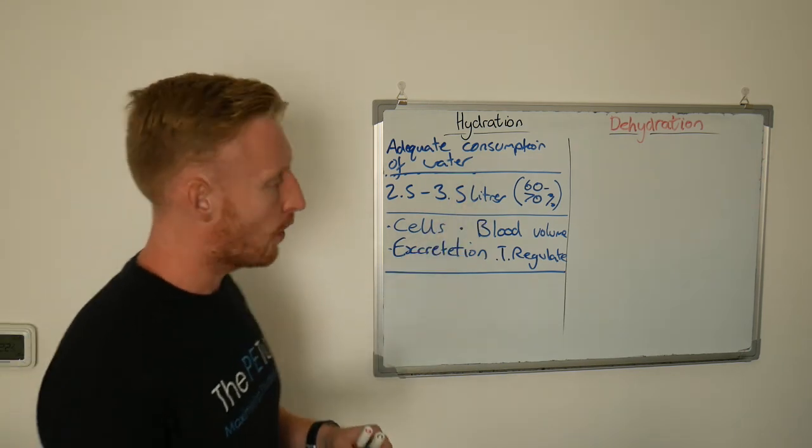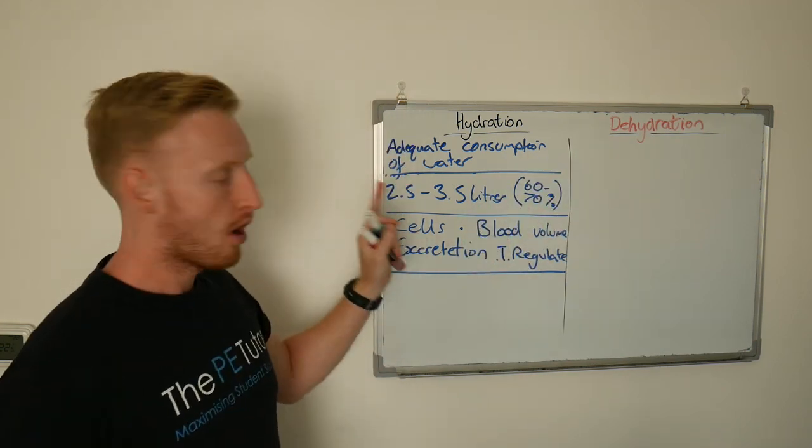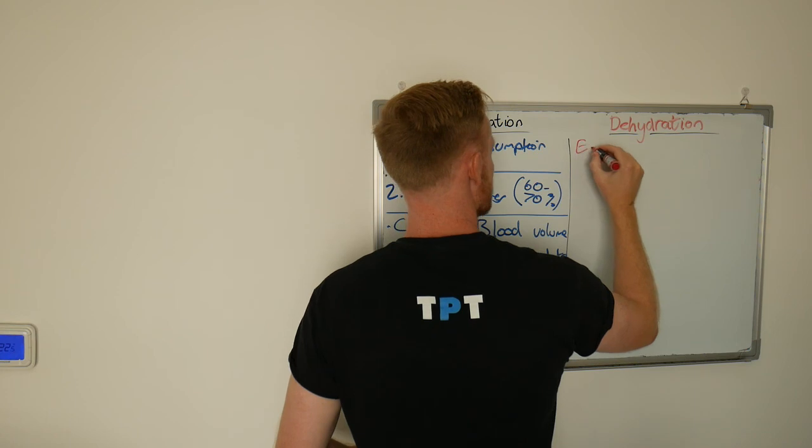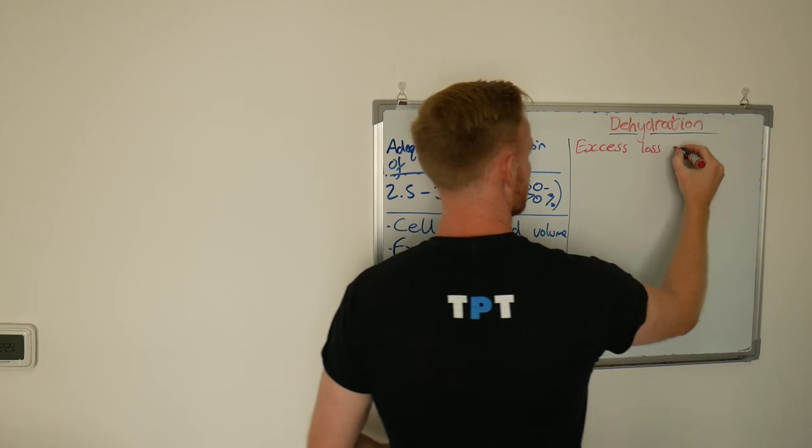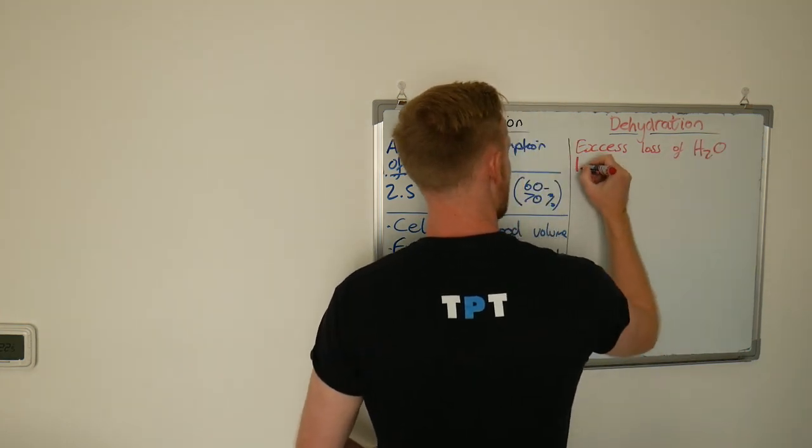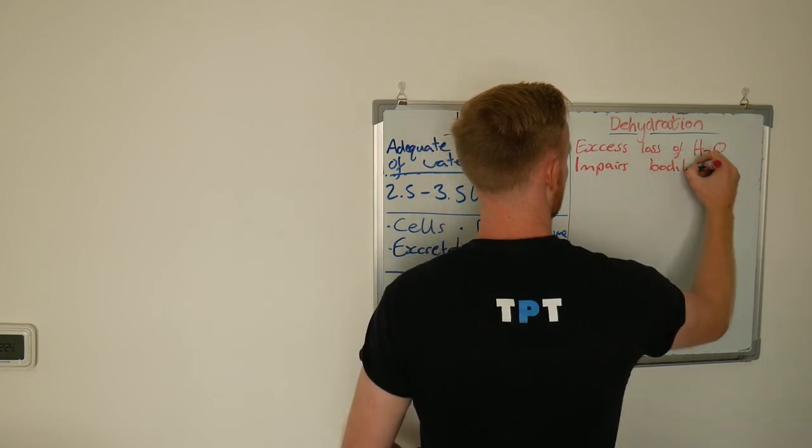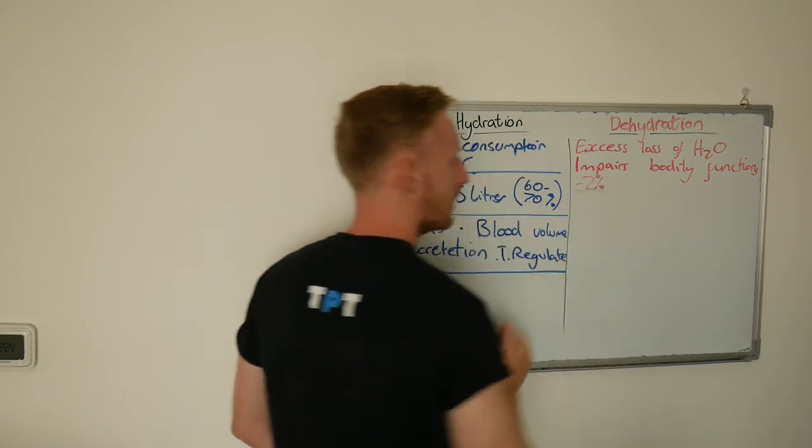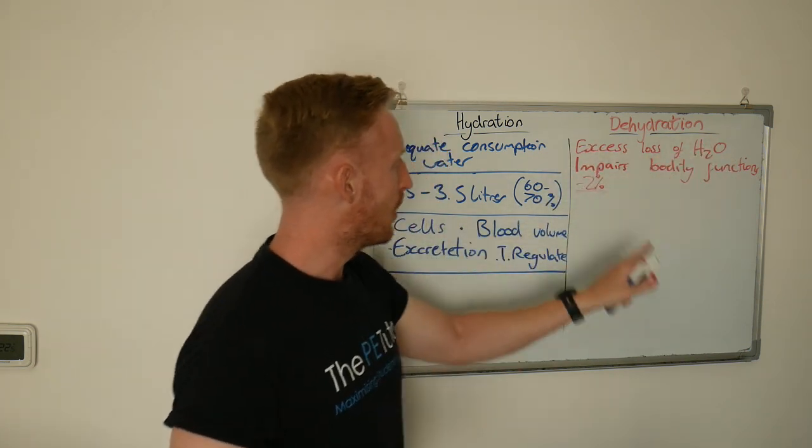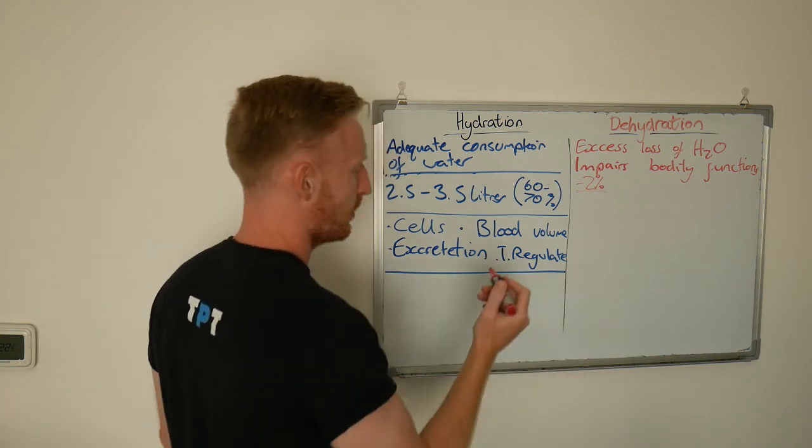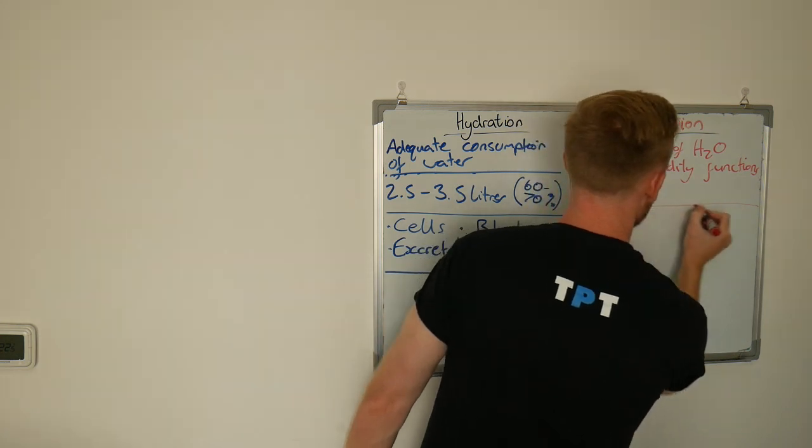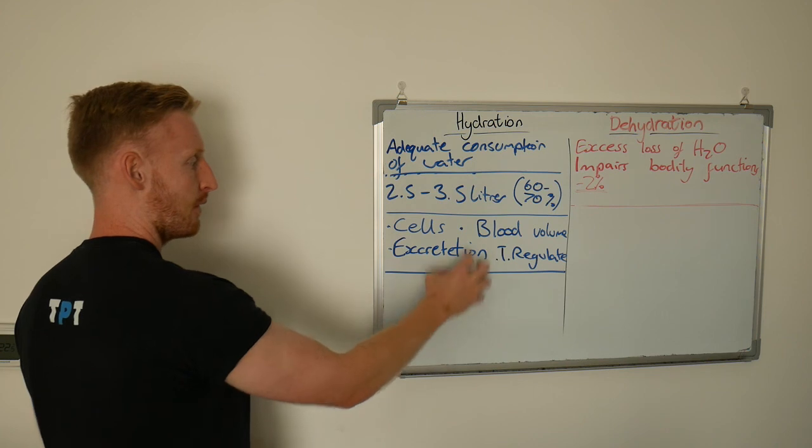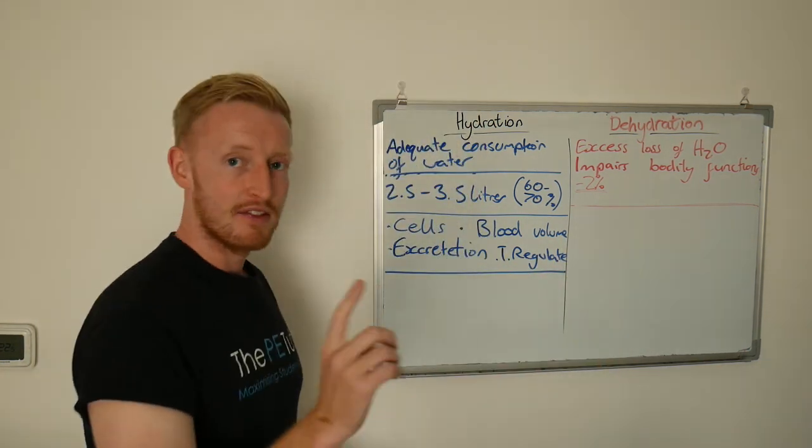So moving on to dehydration. What can happen if we don't get adequate hydration? Well, it's defined as an excessive loss, or excess loss of water, of H2O, to the extent that it impairs bodily function. Now this could be as little as a negative 2% drop in our water mass. So excessive loss of H2O that impairs bodily functions. But what are some of those functions? What are some things that go wrong? I'm now going to jump back to what this word thermoregulation means. Because by understanding what thermoregulation means, and what role water plays, we'll then start to understand the issues that dehydration pose.